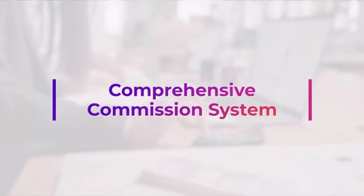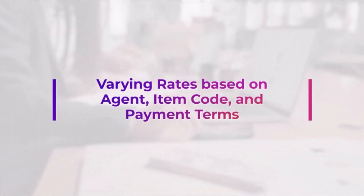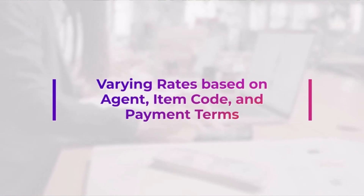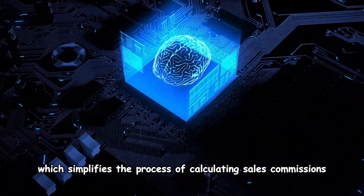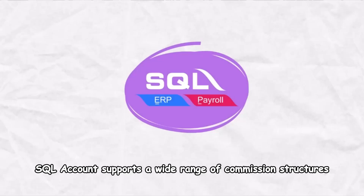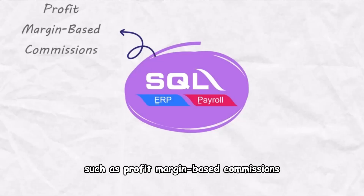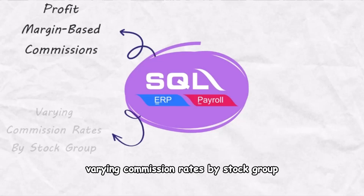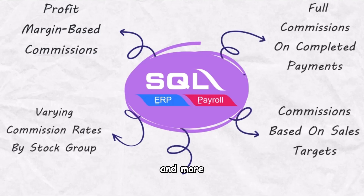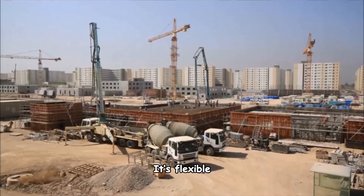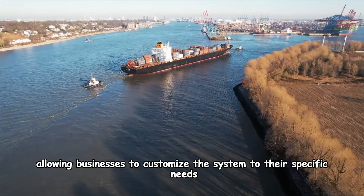Today we're exploring the comprehensive commission system, with varying rates based on agent, item code, and payment terms, which simplifies the process of calculating sales commissions. SQL Account supports a wide range of commission structures such as profit margin-based commissions, varying commission rates by stock group, full commission on complete payments, commission-based sales targets, and more. It's flexible, allowing businesses to customize the system to their specific needs.